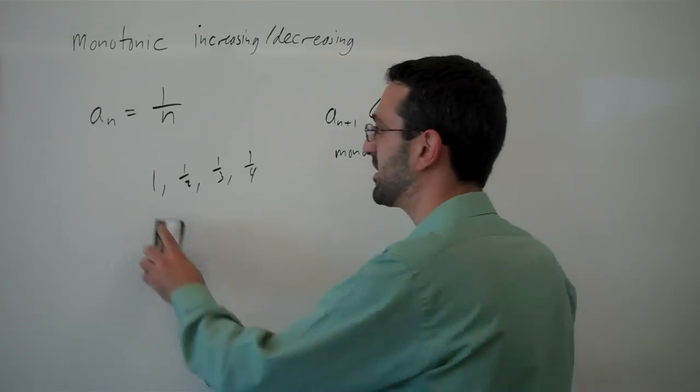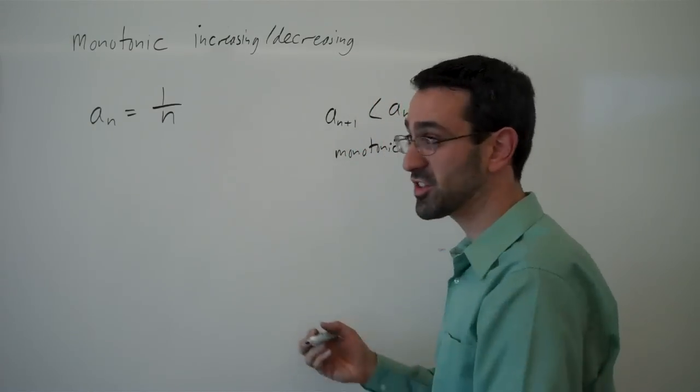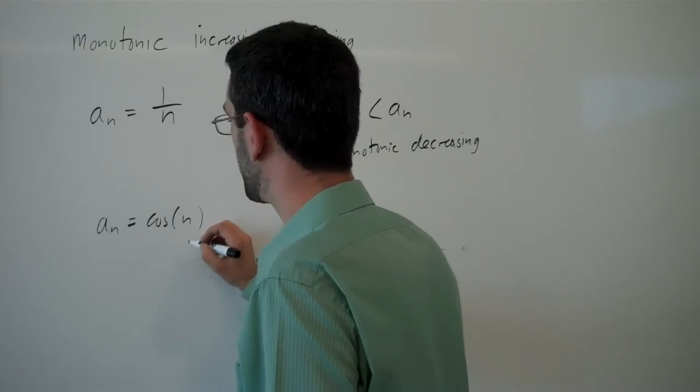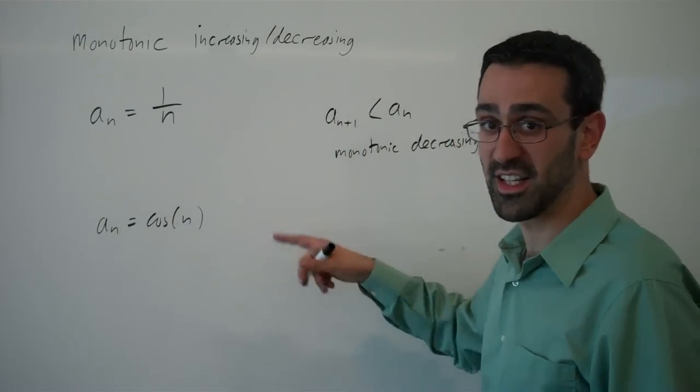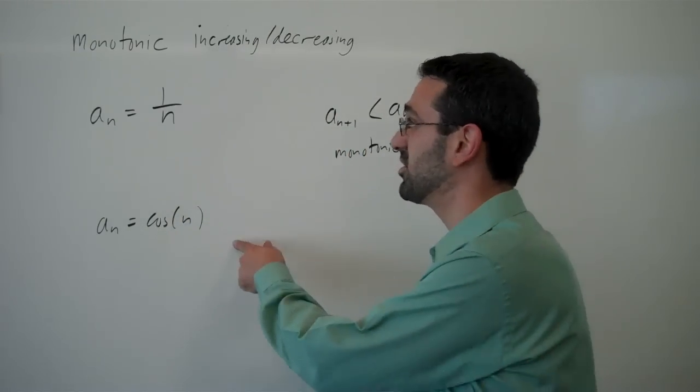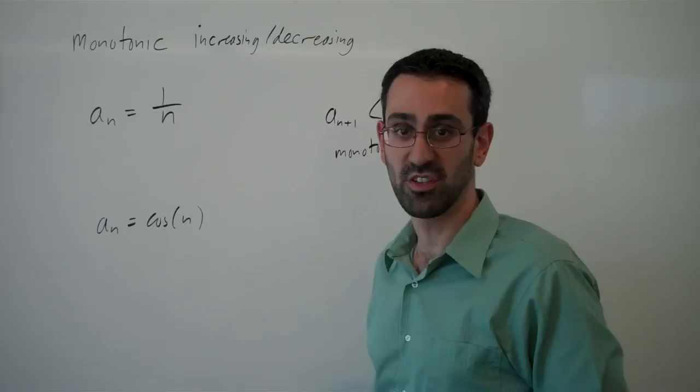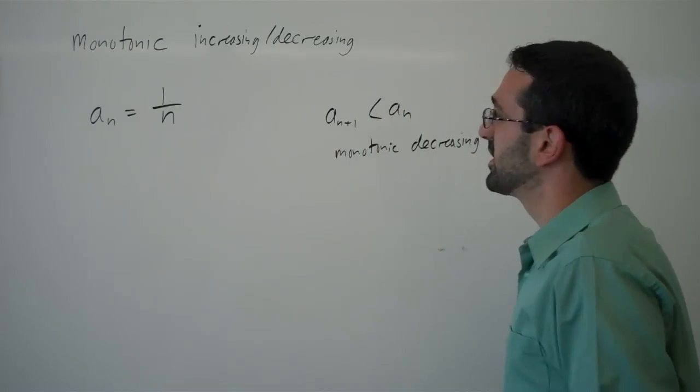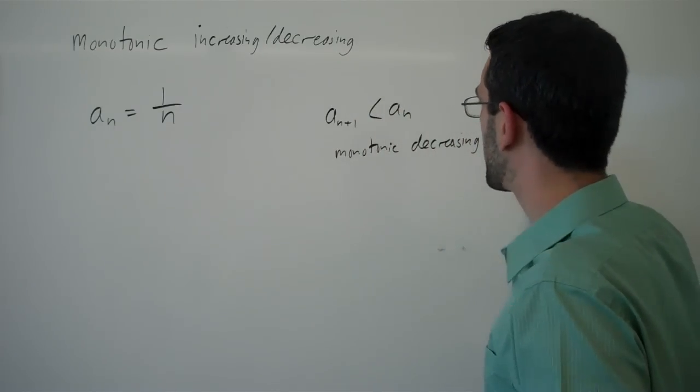Now you can compare that to sort of an extreme example, something like a_n equals cosine of n, which is going to oscillate up and down. This is certainly not monotonic increasing or decreasing. It's neither. Okay, so that's the idea of monotonic.